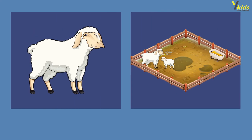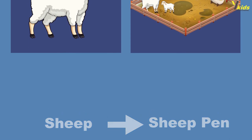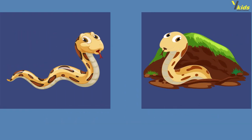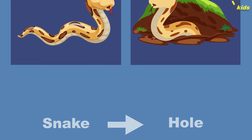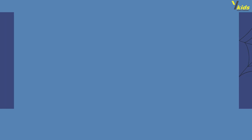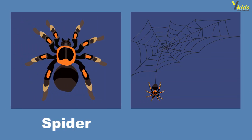Sheep — sheep pen. Snake — hole. Spider — cobweb.